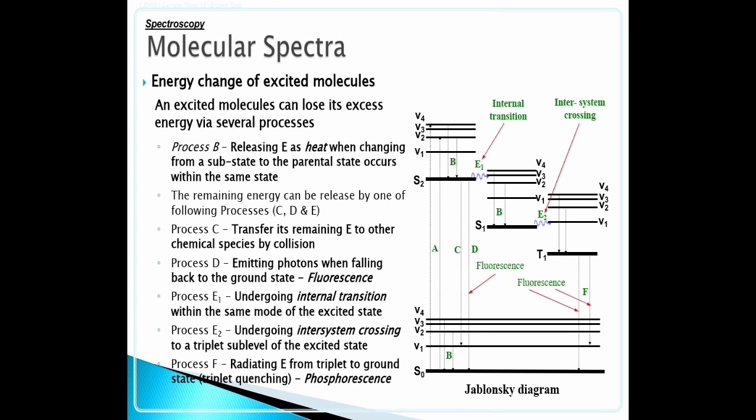Energy change of excited molecules. An excited molecule can lose its excess energy via several processes. Process B: Releasing energy as heat when changing from a sub-state to parental state occurs within the same state. The remaining energy can be released by one of the following processes.